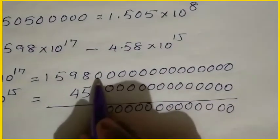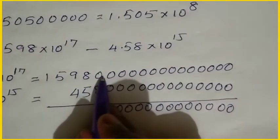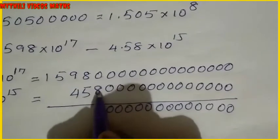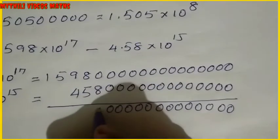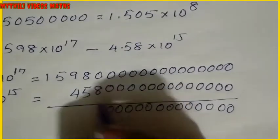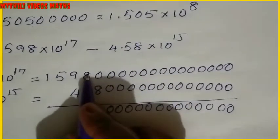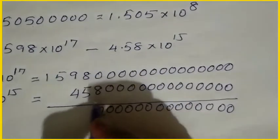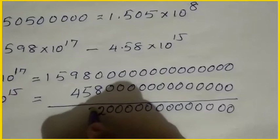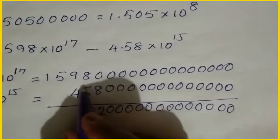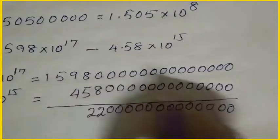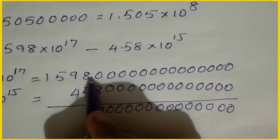After the zeros, we write the significant digits: 10, 10, 8, 2, then 7 — so 7, 5, 2. Then 7, 8.